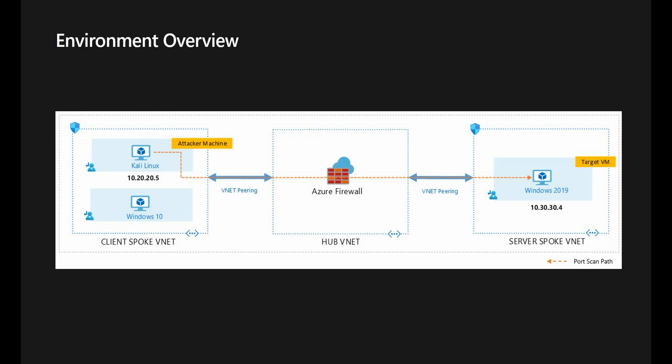And our target will be the Server 2019 VM in the Server VNet on the far right. Moving to the middle, we have a hub VNet where we have an Azure Firewall which filters traffic between the client and the server spokes. Moving to the right, we have our Server VNet, which is also a spoke and has an IP range of 10.30.30.0/24. We have a single machine there, which is a Server 2019 machine with IP address 10.30.30.4, and this machine will be the target of the port scan.